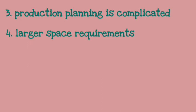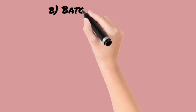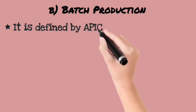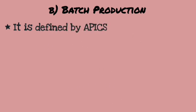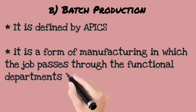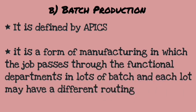Our second system is the batch production system. As defined by APICS — the American Production and Inventory Control Society — this is a form of manufacturing where jobs pass through lots or batches, and every lot has its own routing. Routing is the process of path selection in a network.